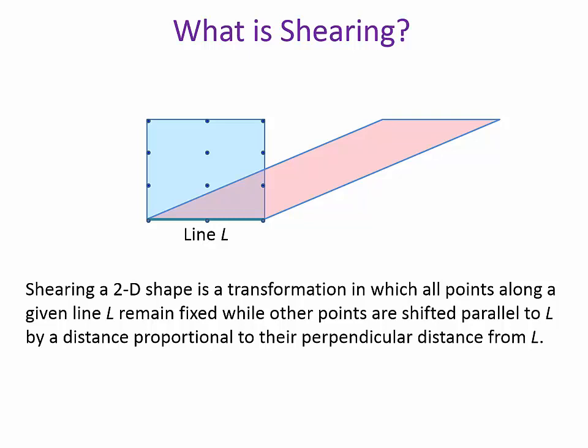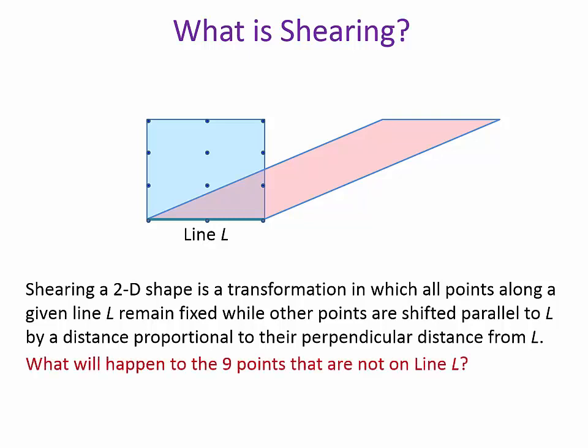What about the other 9 points that are not on line L? Let's see what happened. They are shifted parallel to L by a distance proportional to the perpendicular distance from L.